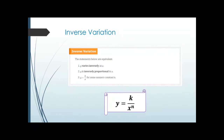Now here is inverse variation. For inverse variation, the input is in the denominator and may or may not have an exponent. The equivalent statements are: 'y varies inversely as x,' 'y is inversely proportional to x,' or 'y equals k over x.' Instead of x being in the numerator, it's in the denominator — that's what makes it inverse, like taking the reciprocal.